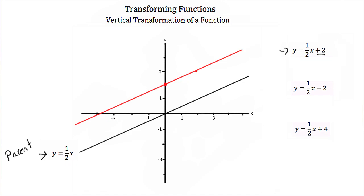Say we wanted to graph y is equal to one-half x minus 2. It's exactly the same as our parent function except we're subtracting 2. To graph it, we would go to negative 2 because that's our y-intercept. Then we would go up 1 and over 2 — that's our rise over run and our slope. We get another point right there, and then we connect the dots and get a line that looks like that.